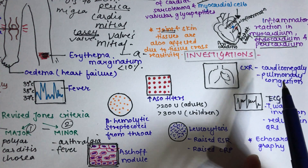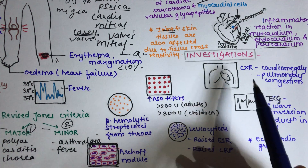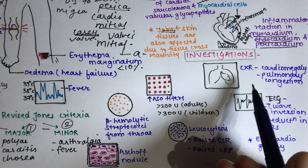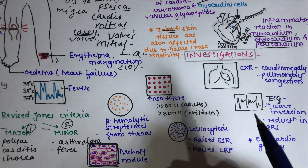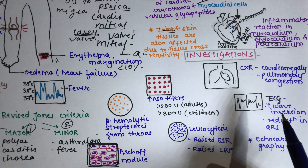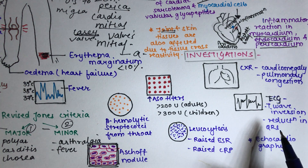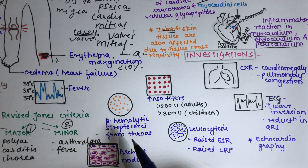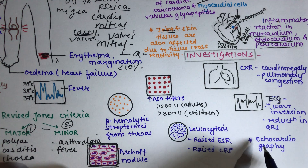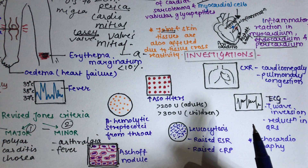ECG shows T-wave inversion or reduction in QRS, and the PR interval is prolonged — as noted in the minor criteria. Echocardiography is also performed. These are the various investigations done for acute rheumatic fever.